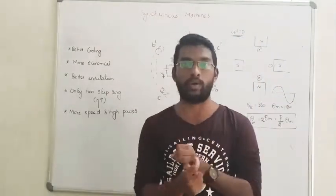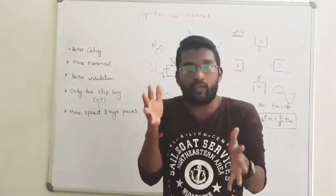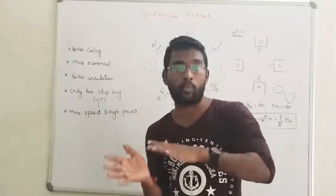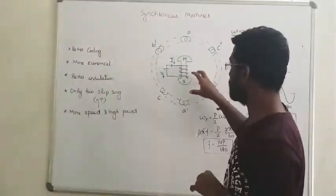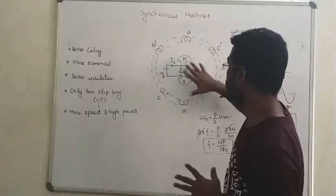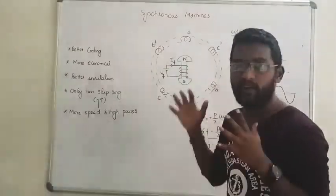First one, what is the difference? In DC machine, the rotor weight is very high, that is very high speed.